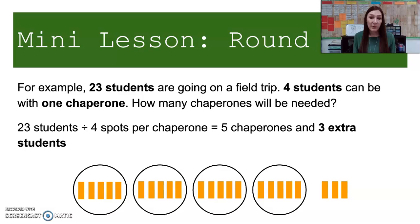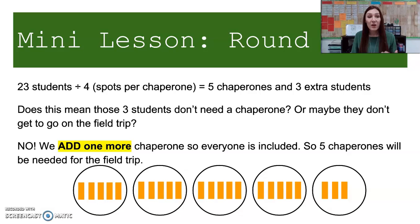If I have 23 students and I divide them by four students per chaperone, I have five chaperones and three extra students. So what do I do with those three students? Do they not get to go? Do they go without a chaperone? No, we'll have to add one more chaperone so that everyone is included. So six chaperones will be needed for the field trip.